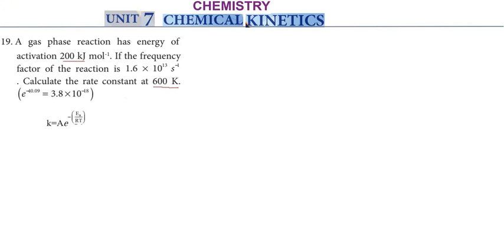Hi students, greetings from Science Education Academy Chemistry Unit 7 Chemical Kinetics. A gas phase reaction has the energy of activation 200 kJ per mole. If the frequency factor of the reaction is 1.6 into 10 to the power 13 per second, calculate the rate constant at 600 Kelvin.